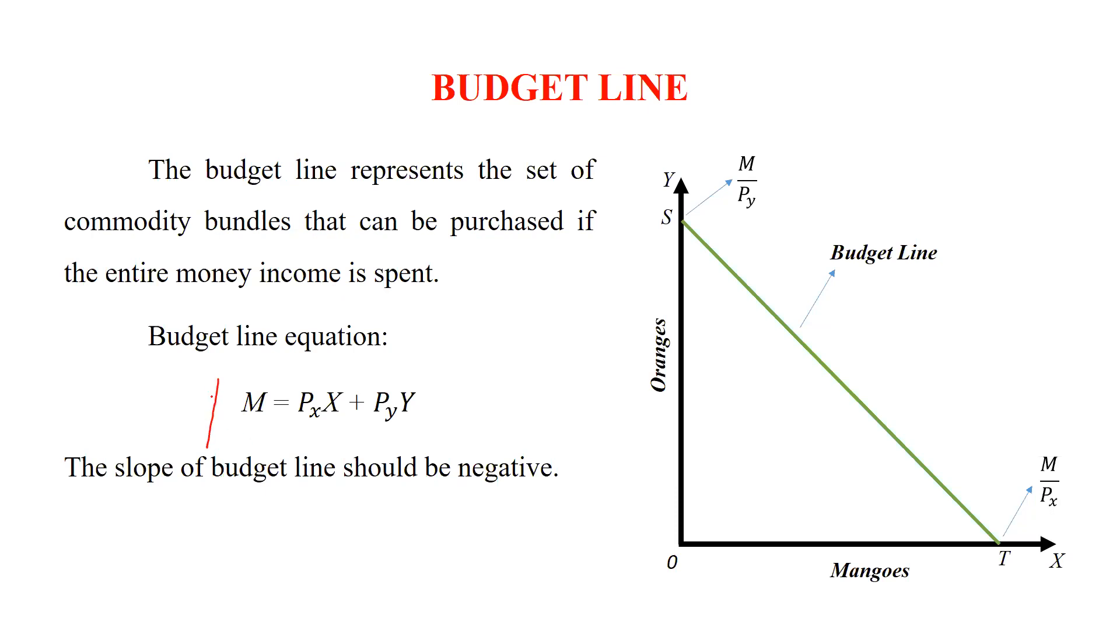So budget line equation means total money, M equals Px times X plus Py times Y, where Px is price of commodity X and Py is price of commodity Y. The slope of budget line should be negative.